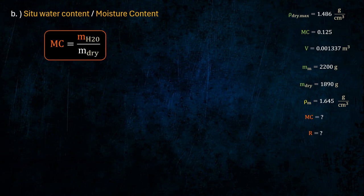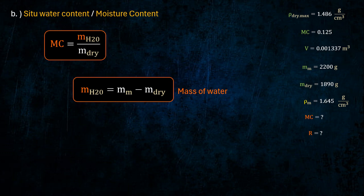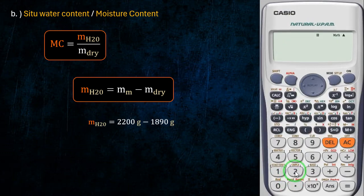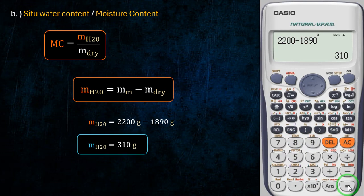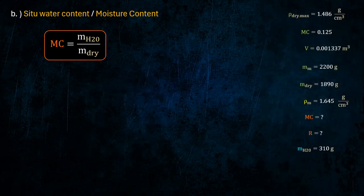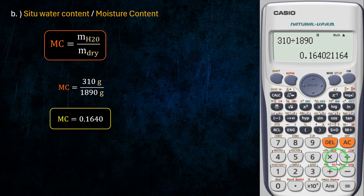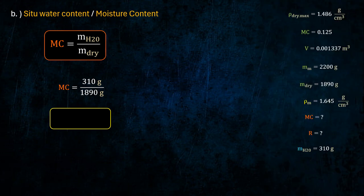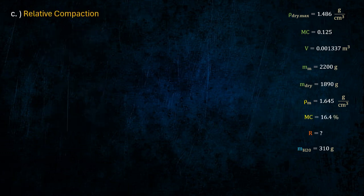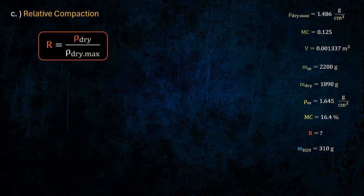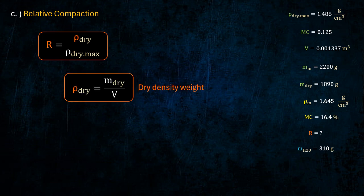Moisture content, mass of water, relative compaction, and dry density weight.